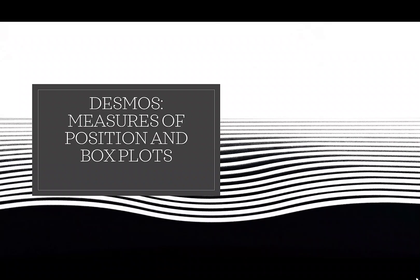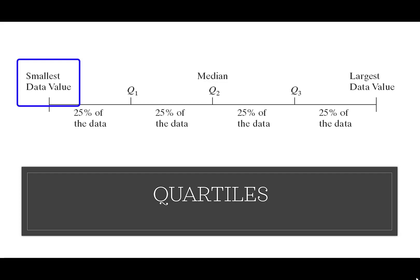Box plots give a graphical representation of quartiles. When we look at quartiles, we're starting with our smallest data value. When we get to Q1, it's going to have 25% of the data that's less than it. When we get to the median, we have 50% of the data less than Q2. Quartile 3, we'll have 75% of the data less than that value, and then we get to our largest data value.